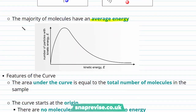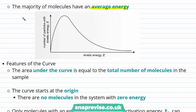Here we have our Boltzmann curve. On the x-axis we have the kinetic energy and on the y-axis we have the number of particles with that specific kinetic energy. The area under the curve is equal to the total number of molecules in the sample.